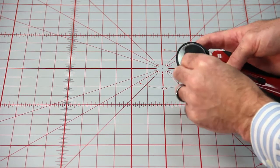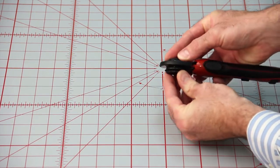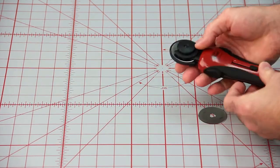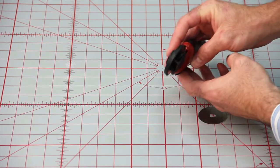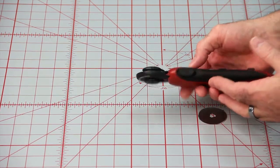Again, we do want to make sure that nut is tight on there so that it is seated all the way. And that is the process to change the blade.